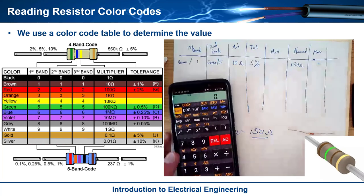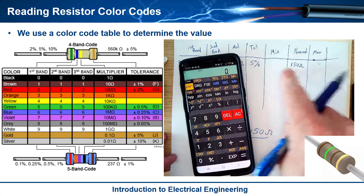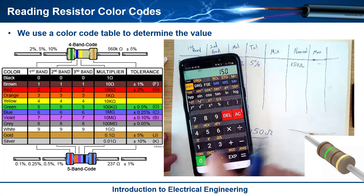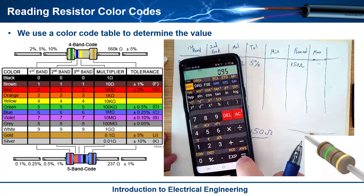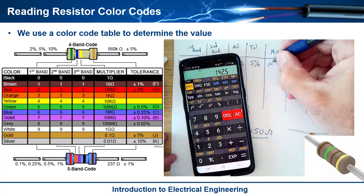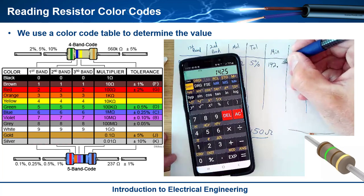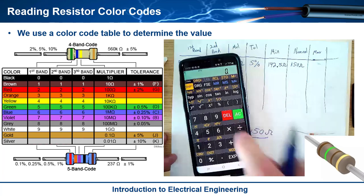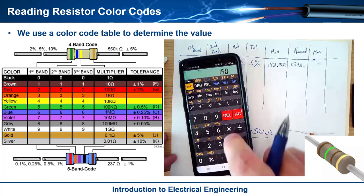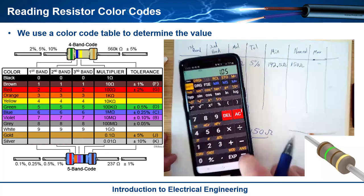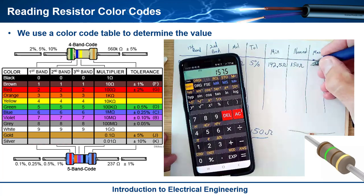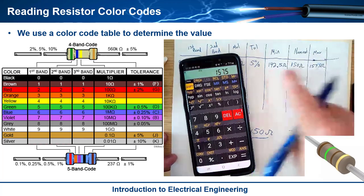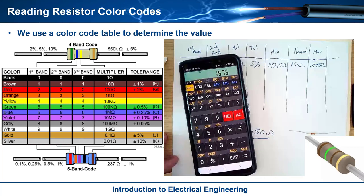That gives you a minimum and a maximum value of the resistance that this could be. If I calculate the minimum value, I'd subtract 5% from 150, so I can take 150 and multiply it by 0.95, and so this resistor will be at least 142.5 ohms, could be 150. And then the max is going to be 150 times 1.05, so plus 5% on that, so you get 157.5 ohms. That is the range of values that this resistor will actually be.